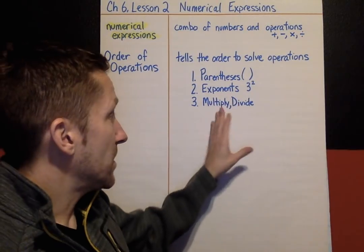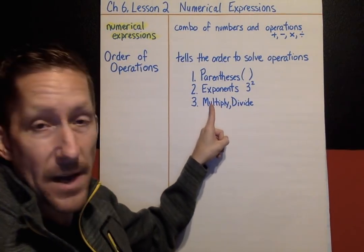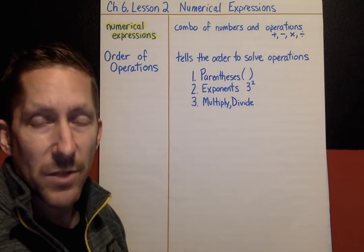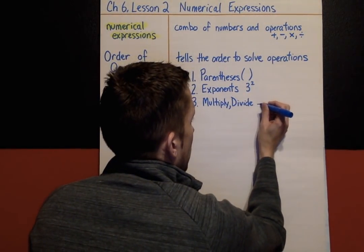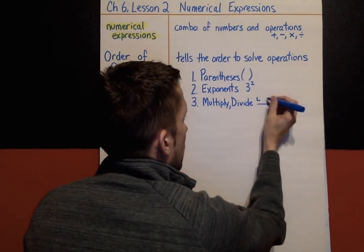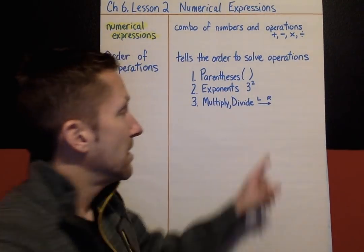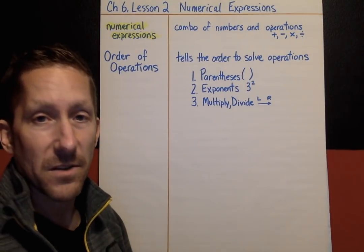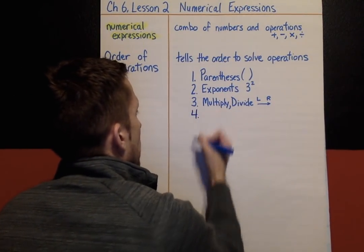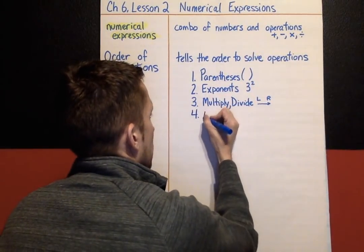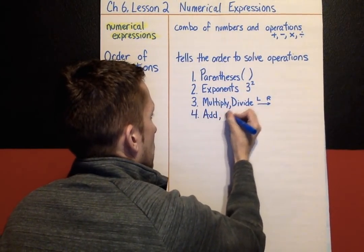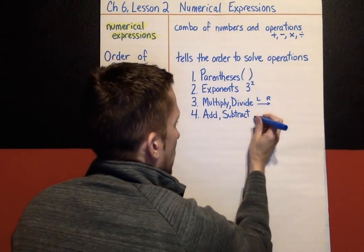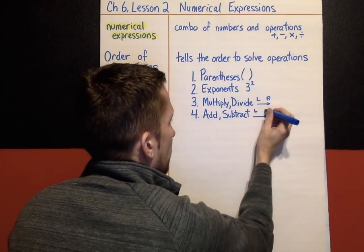This is another place where kids make a mistake. They see multiply and divide and think multiplying comes first, but these are both at step three. The way you figure out which one comes first is you work left to right — you solve whatever comes first from left to right. Finally, the last step is add and subtract, but again, add and subtract are both at step four, so again we solve whatever comes first left to right.